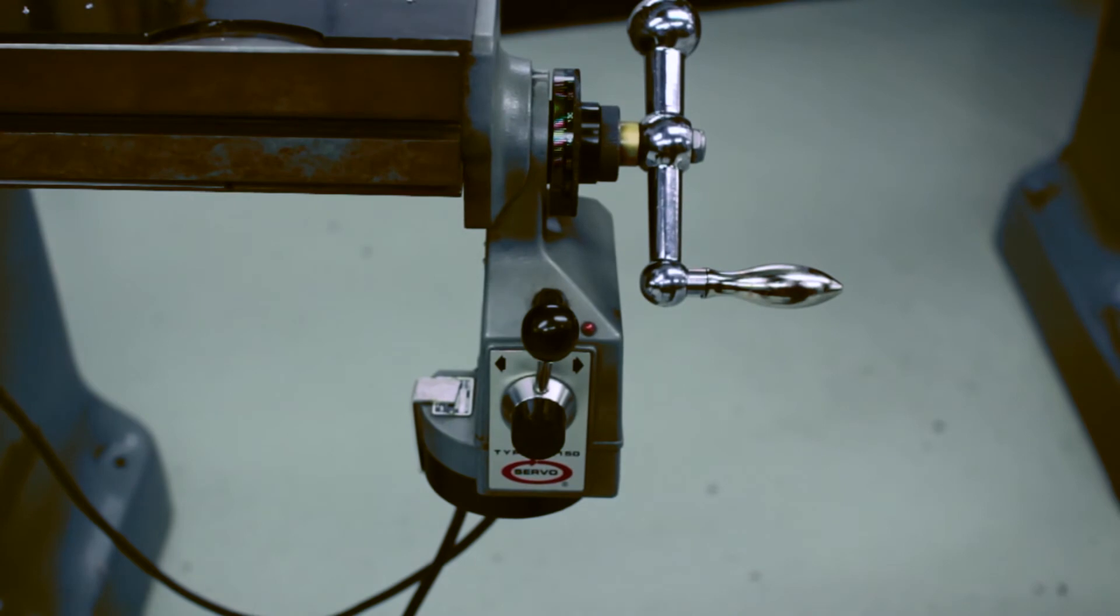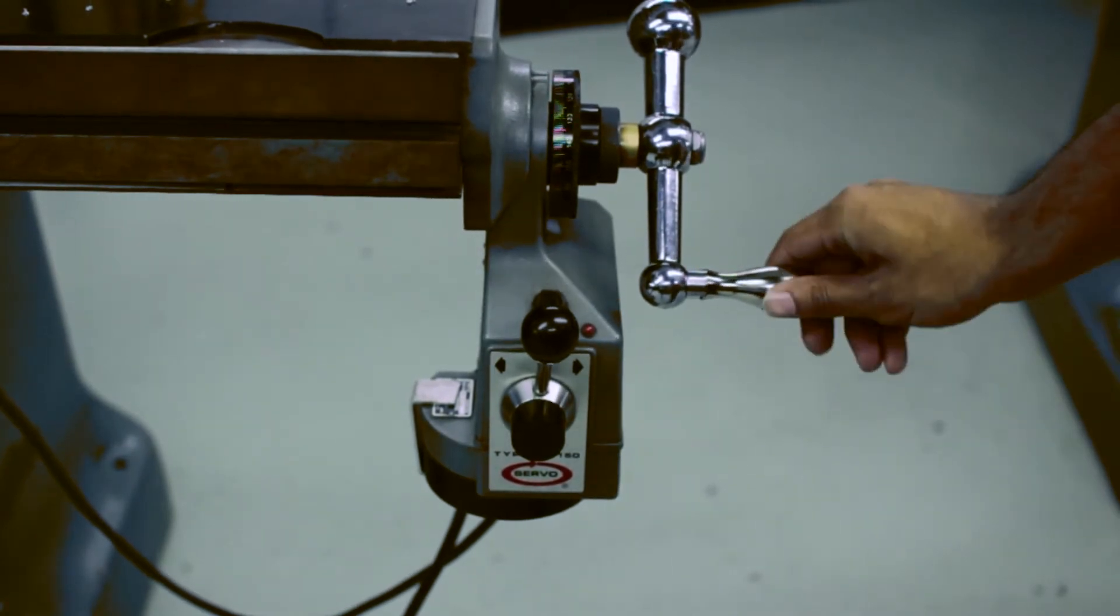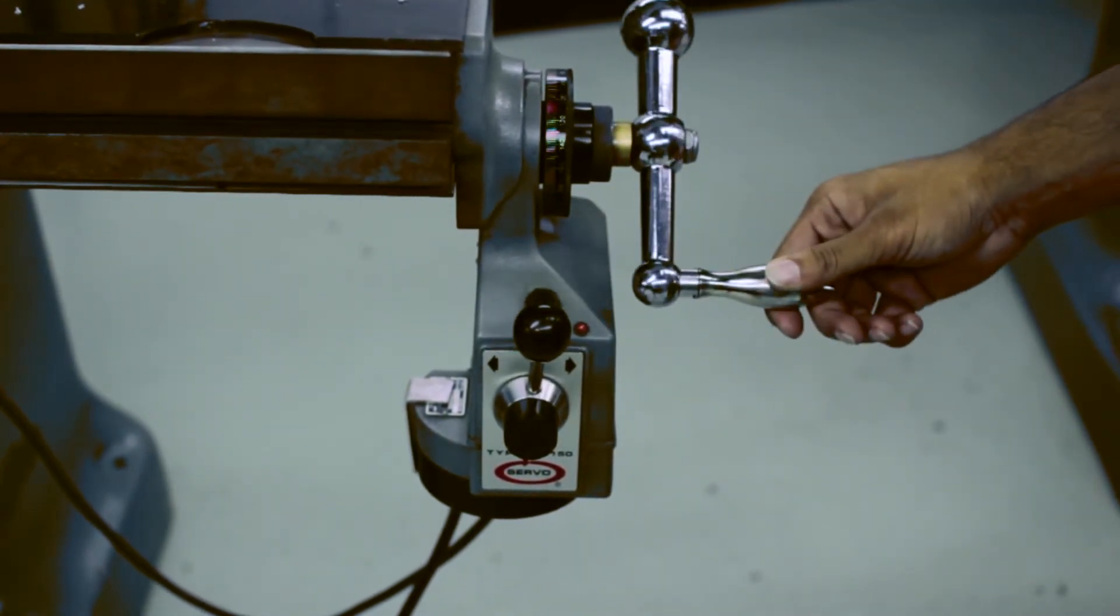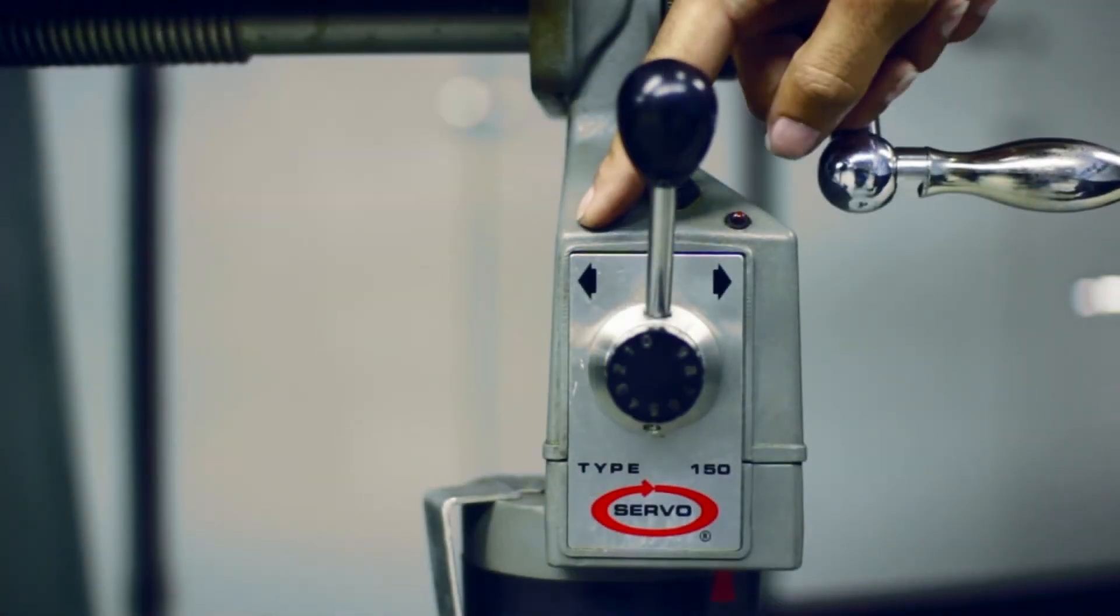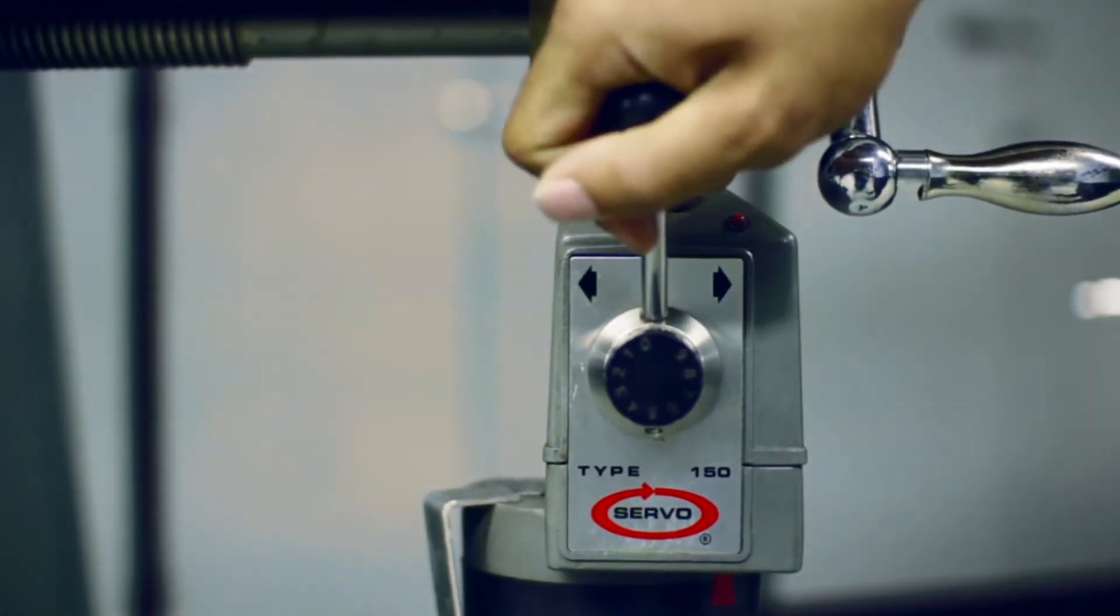Now we're going to use the power feed feature. What the power feed does is it automatically moves the x-axis handle for you at a consistent rate. There are three positions on the power feed: left, neutral, and right.